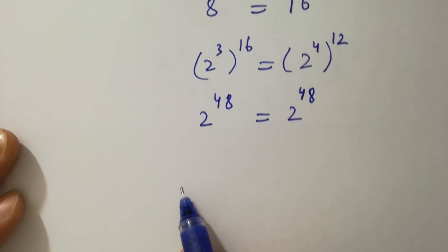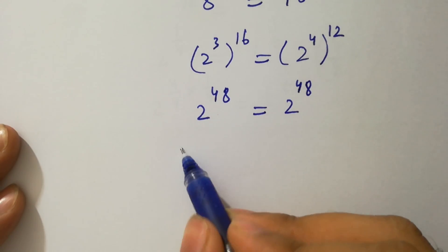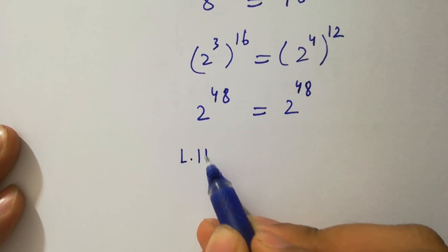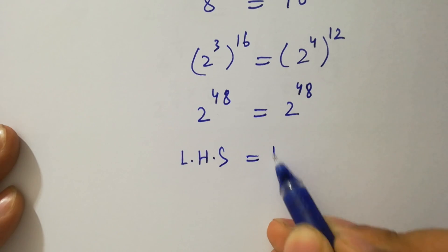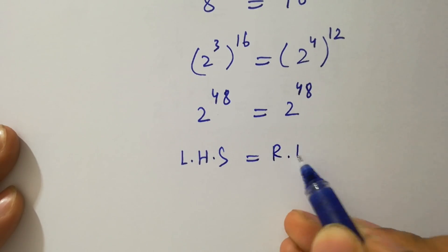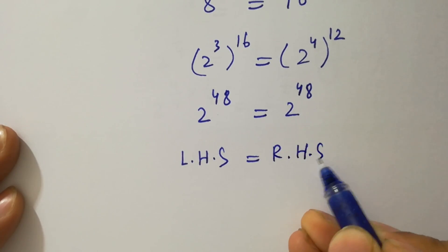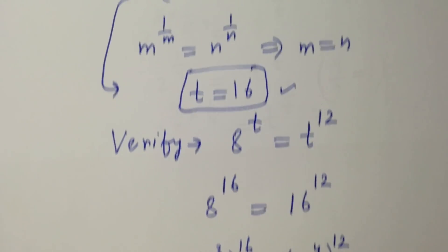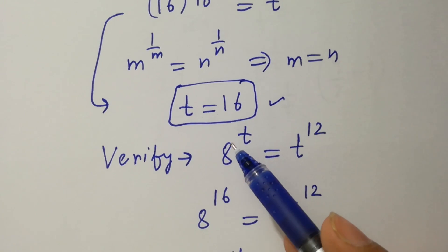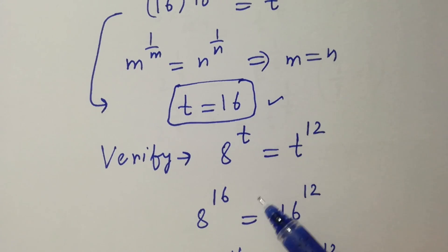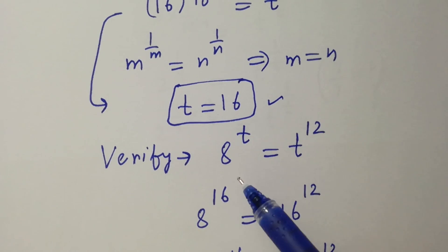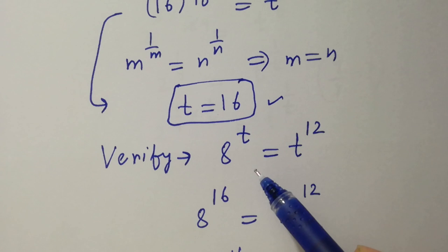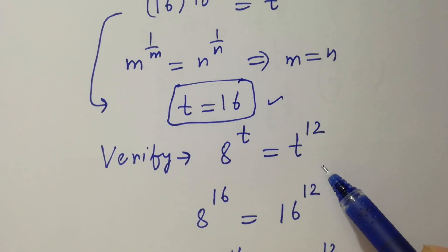Then 2 to the power 3 times 16 is 48, equals 2 to the power 4 times 12 is 48. It shows left hand side equals right hand side, so the value of t equals 16 satisfies the equation 8 to the power t equals t to the power 12.